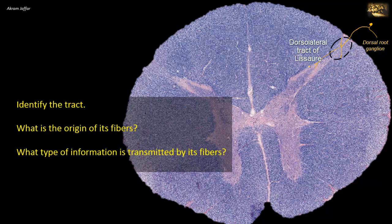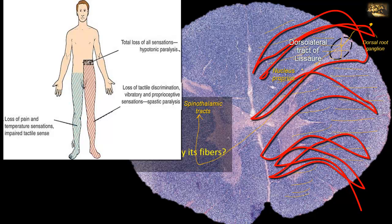Second-order neurons in this pathway originate in the nucleus proprius, and their axons form the contralateral spinothalamic tract. In Brown-Séquard syndrome, where there is a hemisection of the spinal cord, a lesion involving the lateral spinothalamic tract results in contralateral loss of pain and temperature sensation, not immediately below the level of the hemisection, but two to three segments further below. This is because at the level of the section, the fibers that form the spinothalamic tract have already ascended in the contralateral dorsolateral tract for two to three segments below before synapsing on tract cells that cross and form the spinothalamic tract. Therefore, loss of pain and temperature sensation starts two to three segments below the level of the lesion.